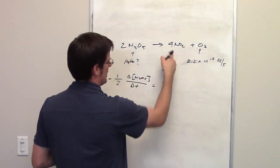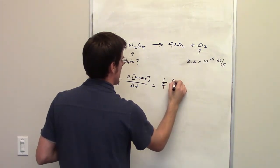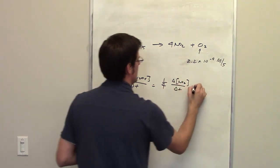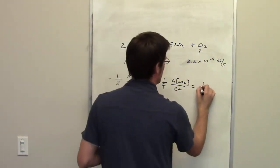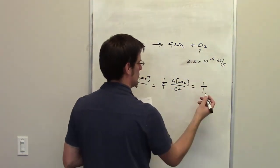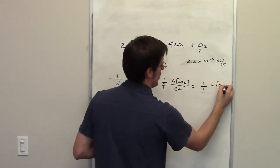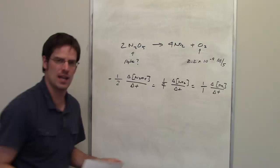Which is going to be equal to 1 divided by the coefficient in front of O2, which is 1, multiplied by the change in the concentration of O2 divided by delta t. Hopefully that makes sense.